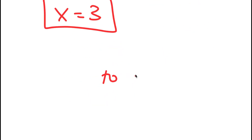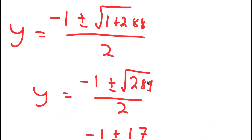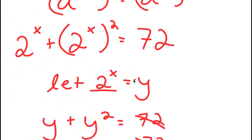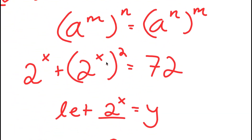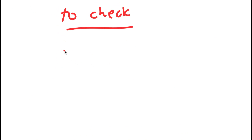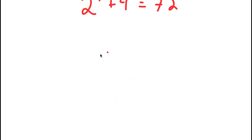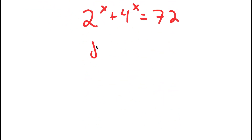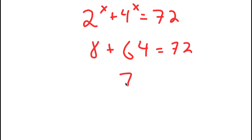To check: my original equation was 2 to the power of x plus 4 to the power of x is equal to 72. If x equals 3, I get 8 plus 64 is equal to 72, and 72 is equal to 72. ✓